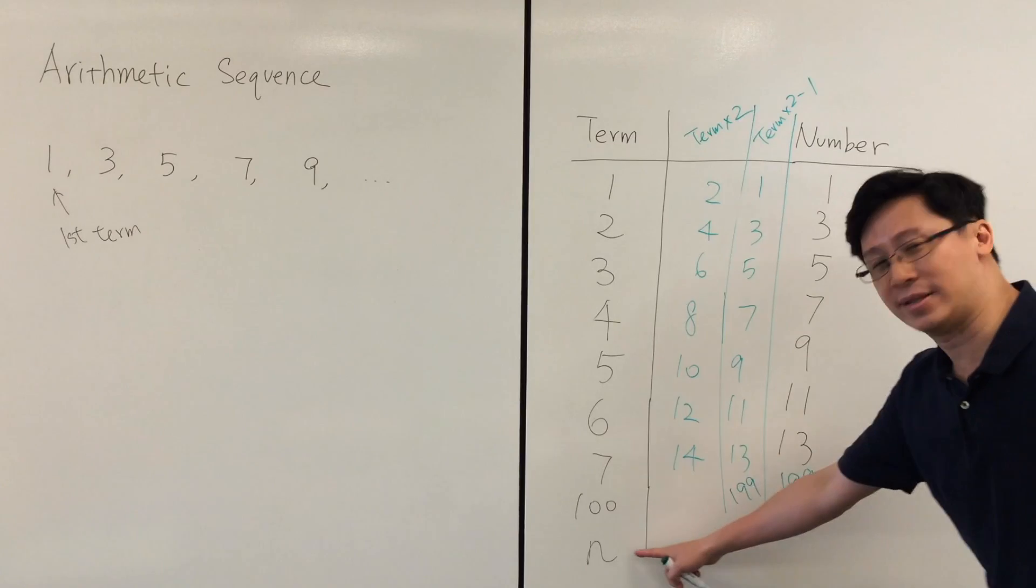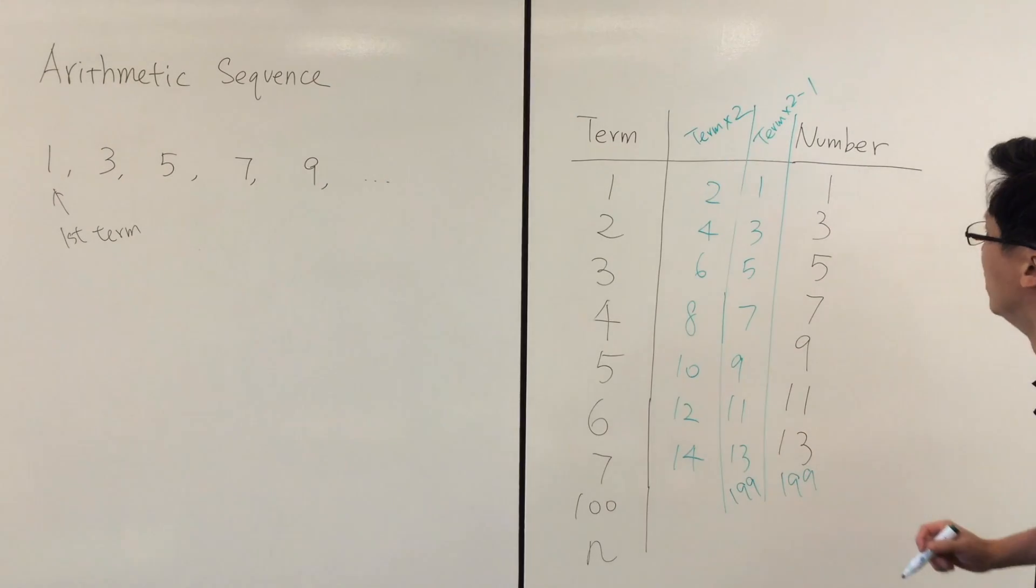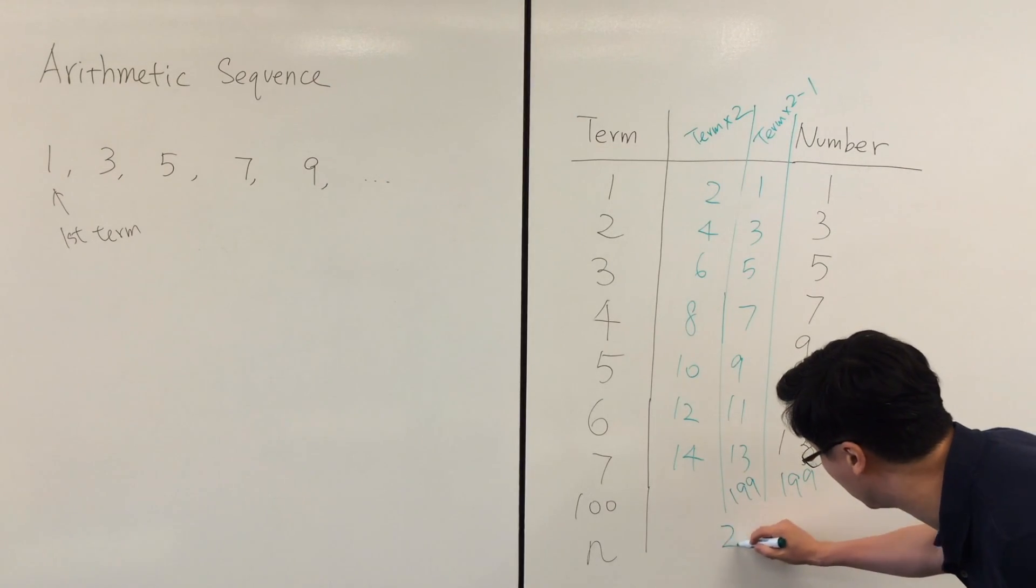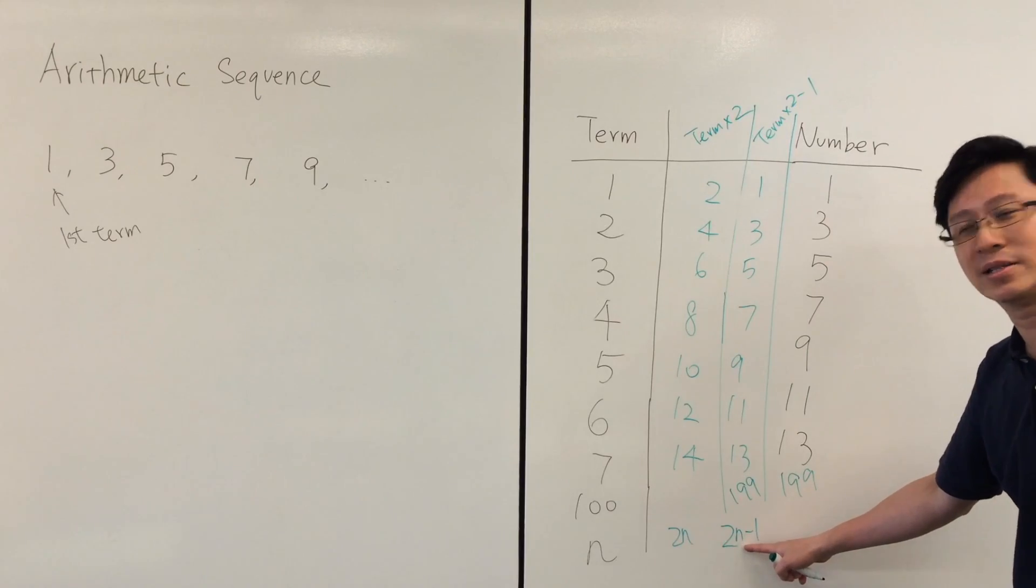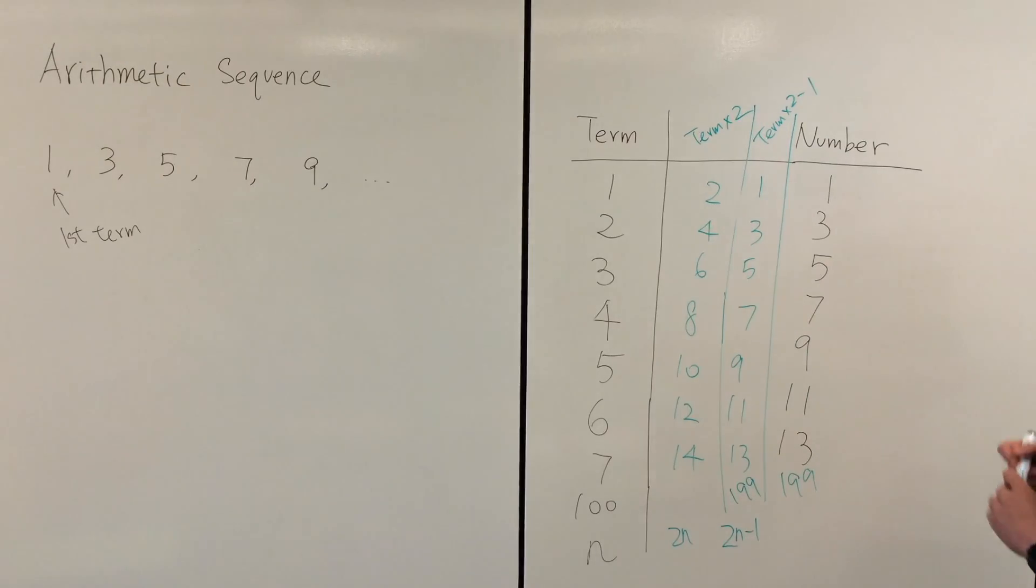So what about the nth number, the general term? We simply multiply this by 2 and subtract 1. Therefore the general term is 2n minus 1.